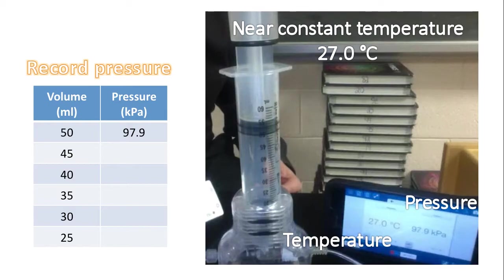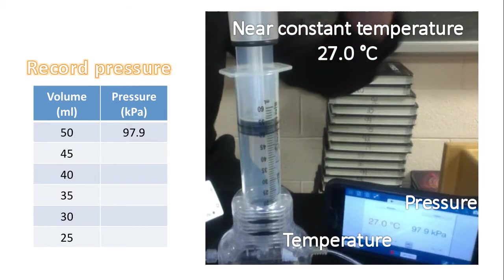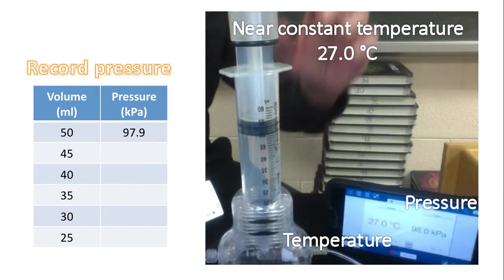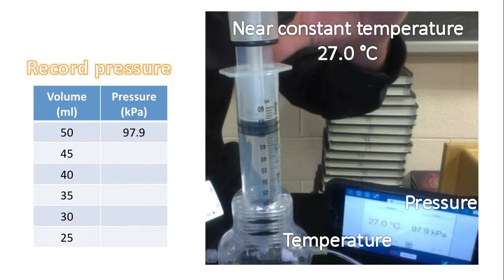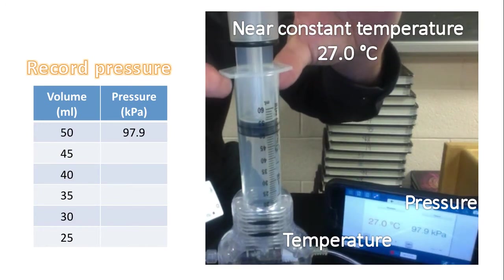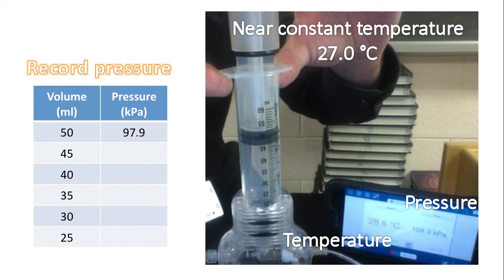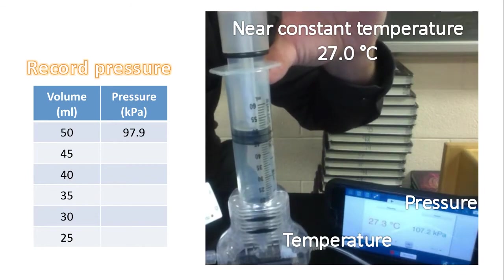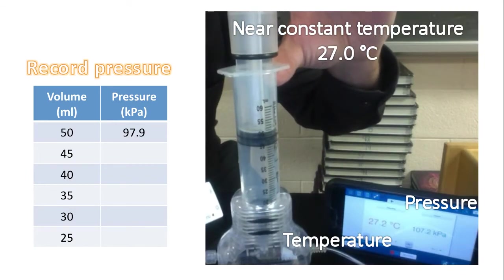Alright, so here's our experiment. And what you're going to do is record this table. Now, as you watch this experiment, we're going to see that I'm going to push down on the piston, and you'll notice that the temperature is going to go up slightly. We're going to wait for that temperature to go back to a very close value of 27.0 degrees Celsius, and then we'll record our data point.